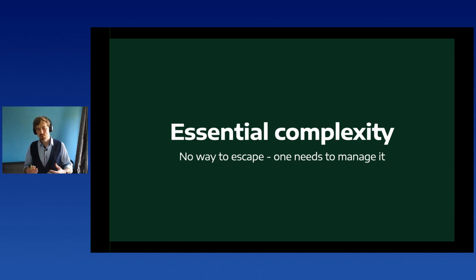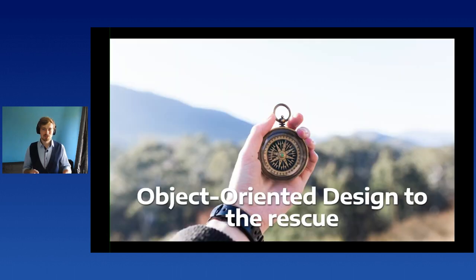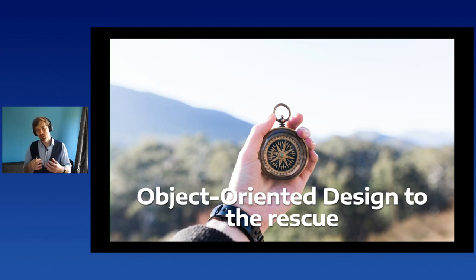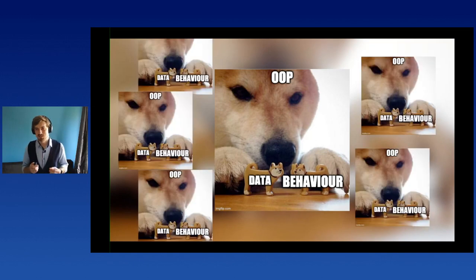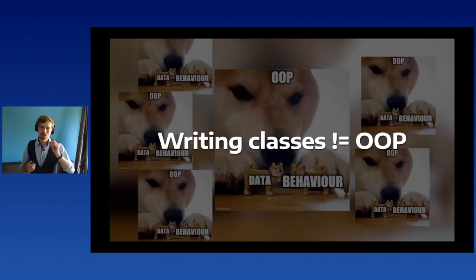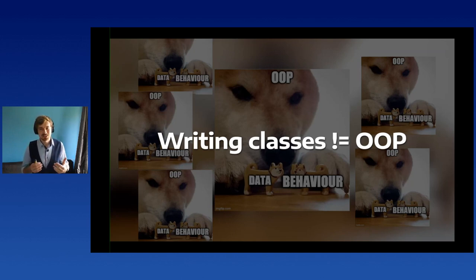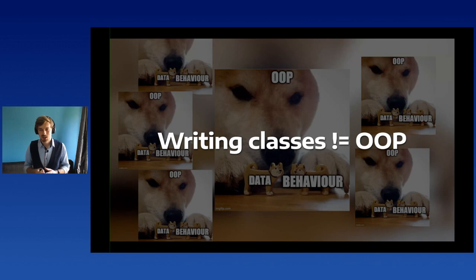We need a way to cope with essential complexity, and object-oriented design folks have been dealing with it for decades. We'll use OOP to manage this complexity. A short reminder: in OOP, we model data and behavior together in the form of objects. An important note: writing classes doesn't make your code object-oriented yet. The code I just showed had classes, yet the design wasn't very intentional.